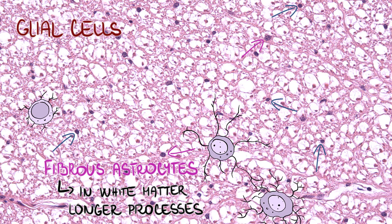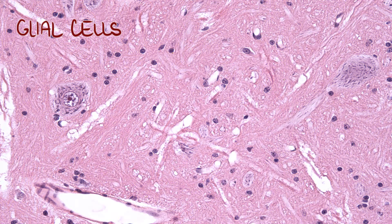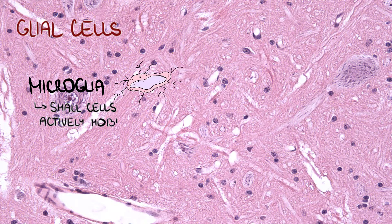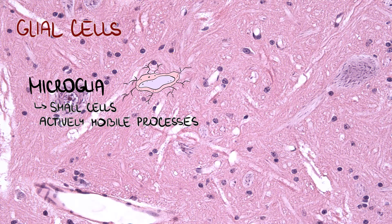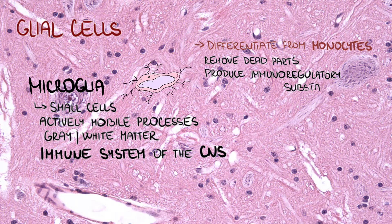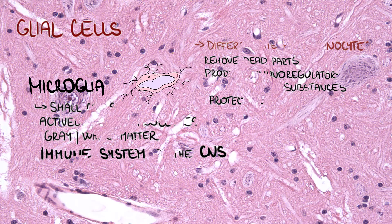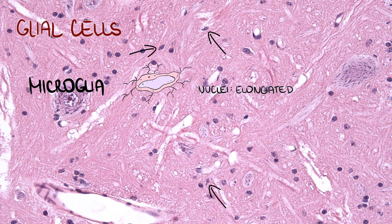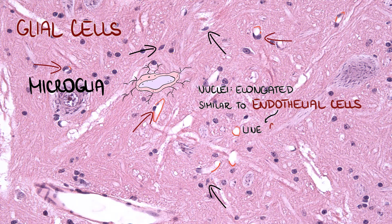Another type of glial cells are microglial cells. Microglia are small cells with actively mobile processes, evenly distributed throughout gray and white matter. Microglia are the immune system of the CNS — they differentiate from monocytes, just like macrophages in proper connective tissue. They remove dead parts of cells, produce immunoregulatory substances, and provide protection against harmful substances and bacteria. They have elongated nuclei and are very similar to endothelial cells, which line capillaries in the nervous system, so don't confuse these two.